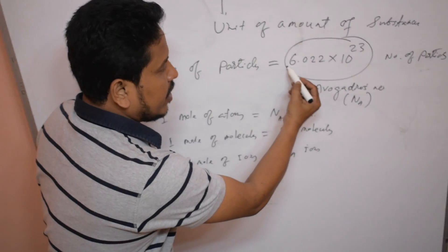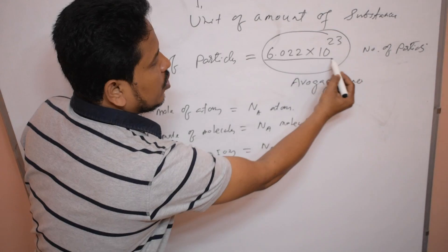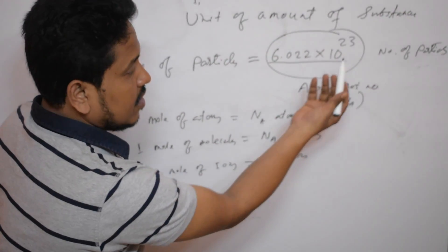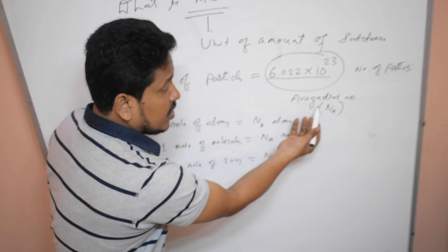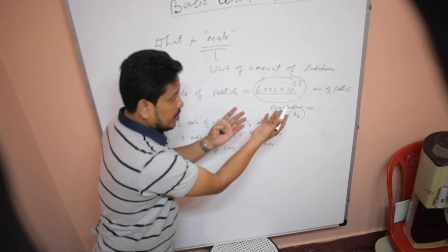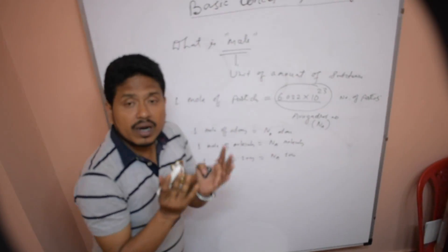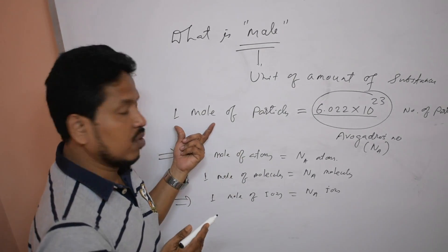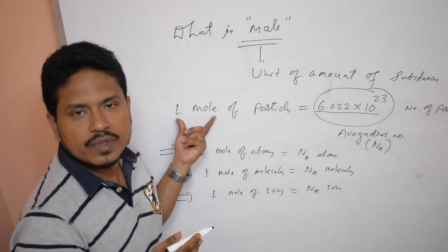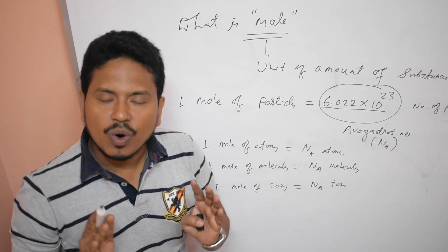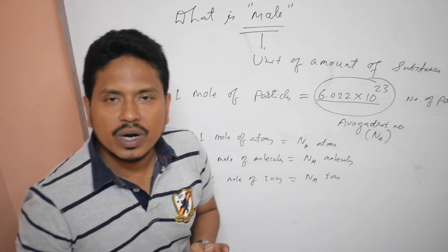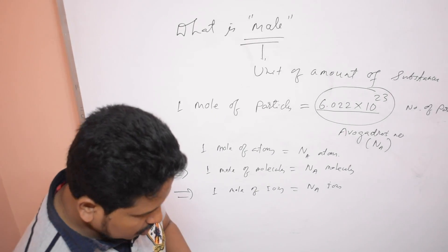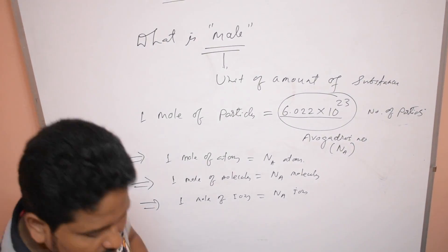So what you should understand is that one mole is a definite number of particles. That number is 6.02 × 10²³ — Avogadro's number of particles. That means the number of particles in one mole of atoms. I hope you all understand what one mole is, so let us proceed.